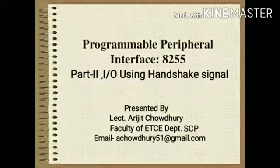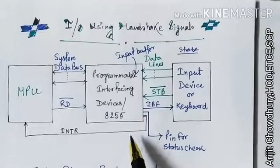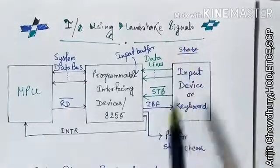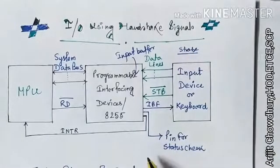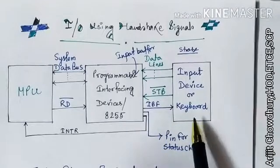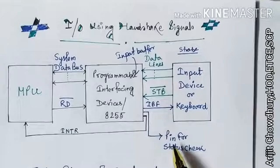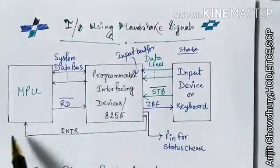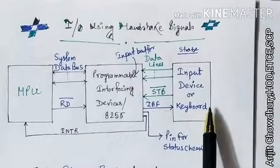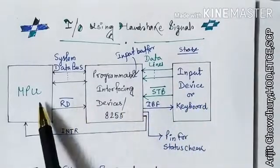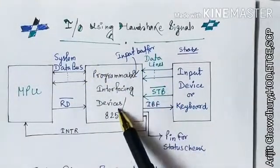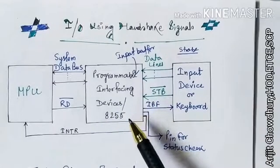Hello guys. In this session we are going to discuss about I/O using handshaking signals — that is the second part of 8255. We will learn about input-output interfacing using handshaking signals. We will discuss an input device, let it be a keyboard, and an output device, let it be a printer, and how they communicate with the microprocessor. For interfacing between input/output devices and the microprocessor, there is a need for a circuitry called a programmable interfacing device, or 8255, which has been discussed in the previous class.